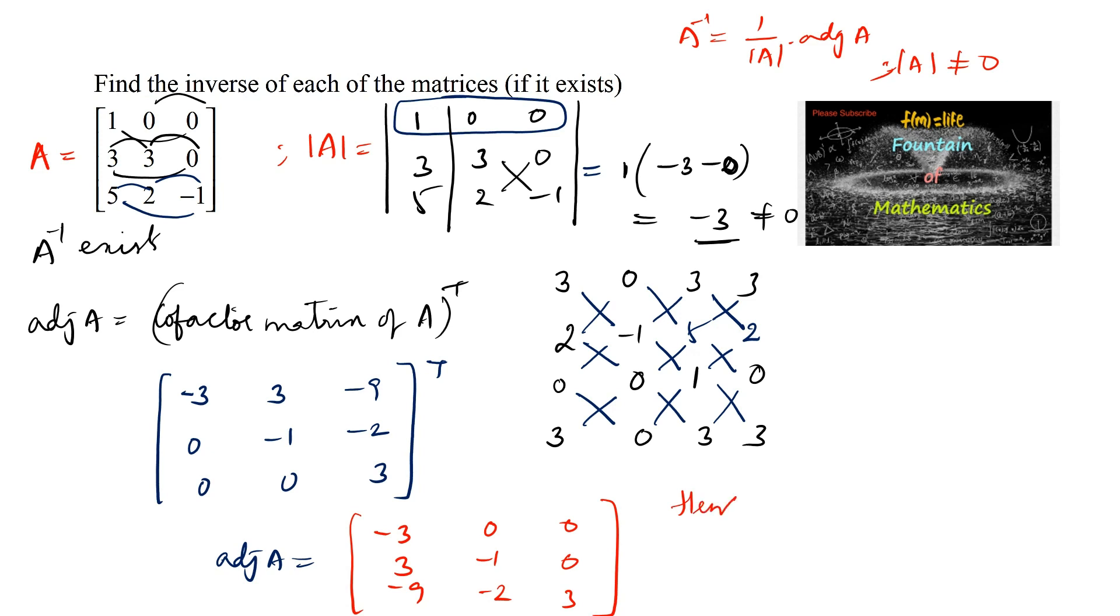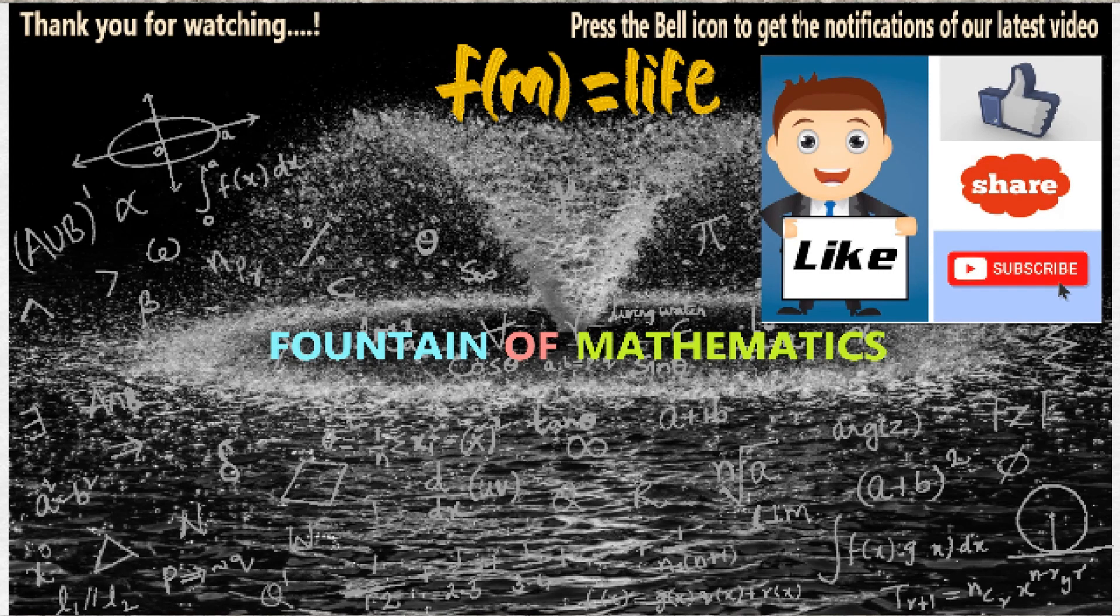A inverse is equal to 1 by the determinant, that is minus 1 by 3, times the adjoint matrix: minus 3, 0, 0; 3, minus 1, 0; and minus 9, minus 2, and 3. This is the answer. Thank you.